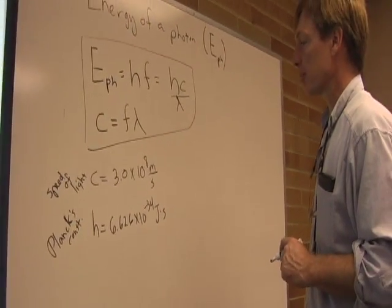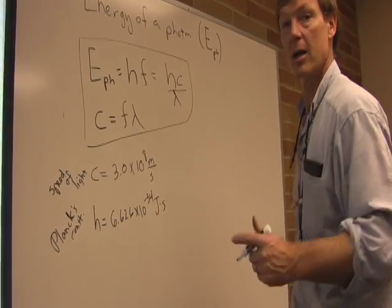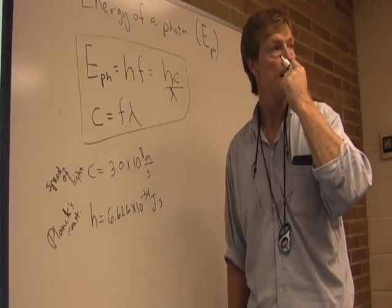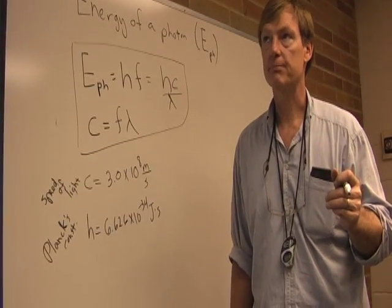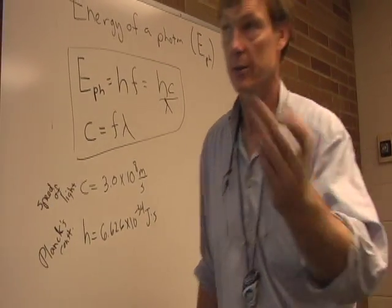So let's do an example with all this in here. Let's figure out the number of photons leaving a 100 watt bulb every second. Let's try this.